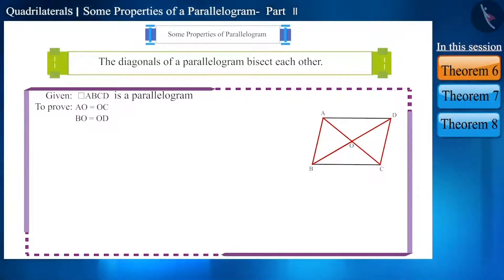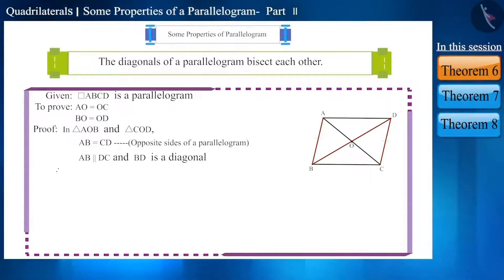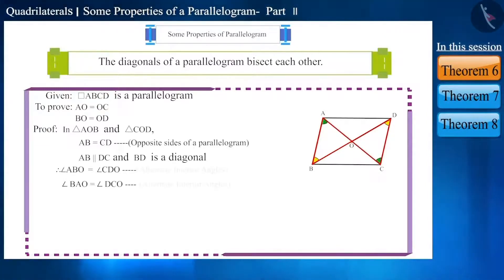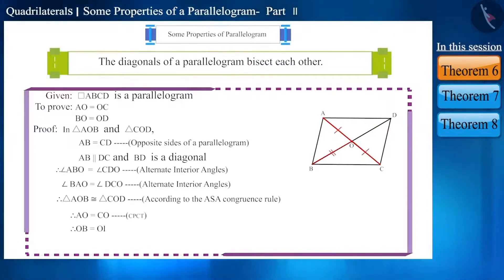In triangles AOB and COD: side AB equals side CD because opposite sides of a parallelogram are equal. Side AB is parallel to DC and BD is a diagonal, so angle ABO equals angle CDO and angle BAO equals angle DCO as alternate interior angles. Thus both triangles are congruent by the ASA congruence rule. Hence side AO equals side CO and side OB equals side OD, proving that the diagonals of a parallelogram bisect each other.